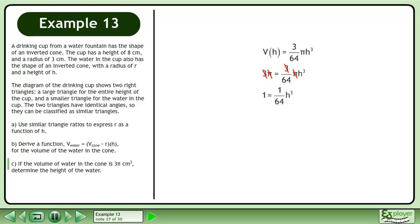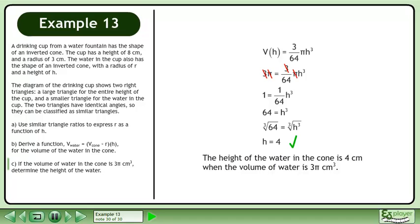This gives us 1 equals 1 over 64 h cubed. Cross multiply to get 64 equals h cubed. This gives us h equals 4. The height of the water in the cone is 4 centimeters when the volume of water is 3 pi cubic centimeters.